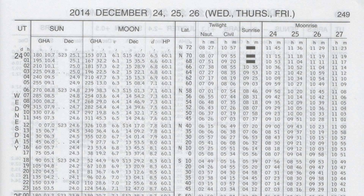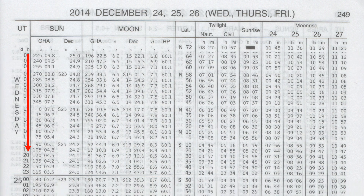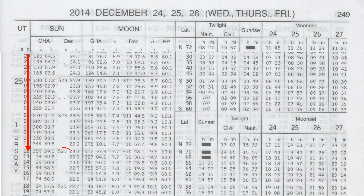First, we look up our declination and decorrection factor in the daily pages of the Nautical Almanac, in the same place we obtained our tabulated GHA. As with the GHA, where we used only the hour and ignored the minutes, for declination we do the same. In our example, the time was 1300 hours 35 minutes and 9 seconds. We ignore the minutes for now, so we go to 1300 hours.